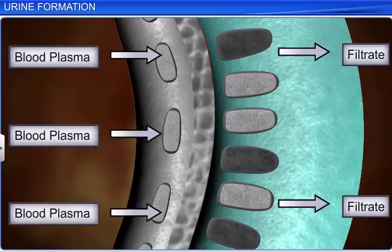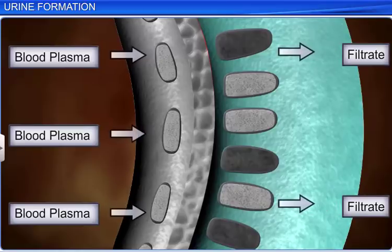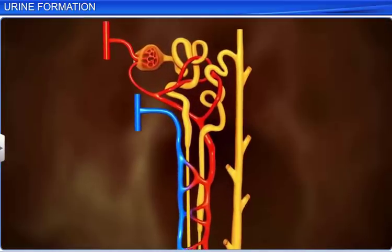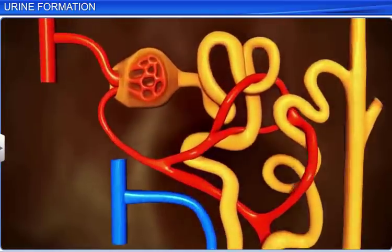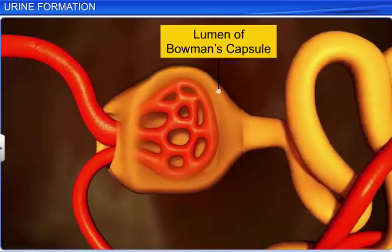These slits or membranes help in the filtration of blood, and almost all the constituents of the plasma, except the proteins, pass into the lumen of Bowman's capsule. This is a reason why glomerular filtration is known as ultrafiltration.